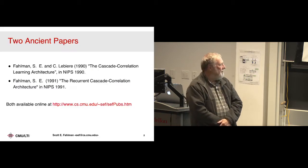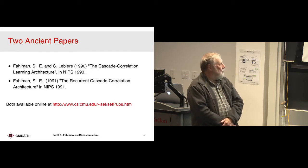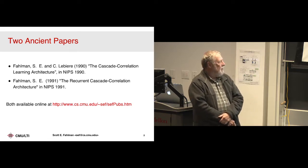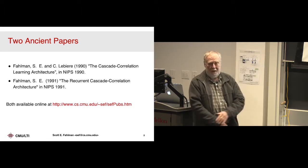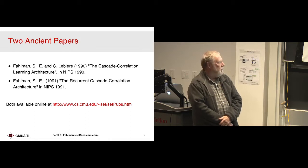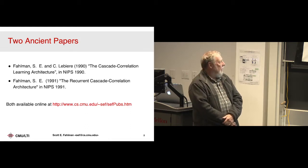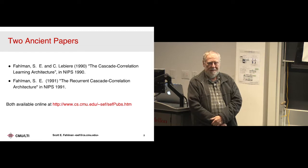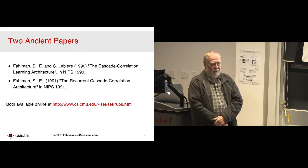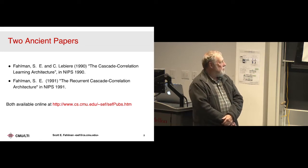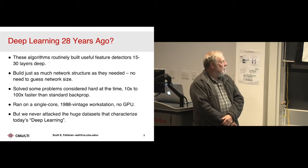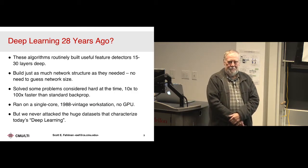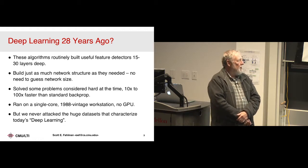What I'll be talking about today is the cascade correlation algorithm and architecture for deep learning. This is arguably the first deep learning system. So two ancient papers: one in 1990 with Chris Lebiere, introducing the basic cascade correlation architecture, and then the following year there was a recurrent version that got published. I'll be talking about both of those today — these were like 28 years ago.